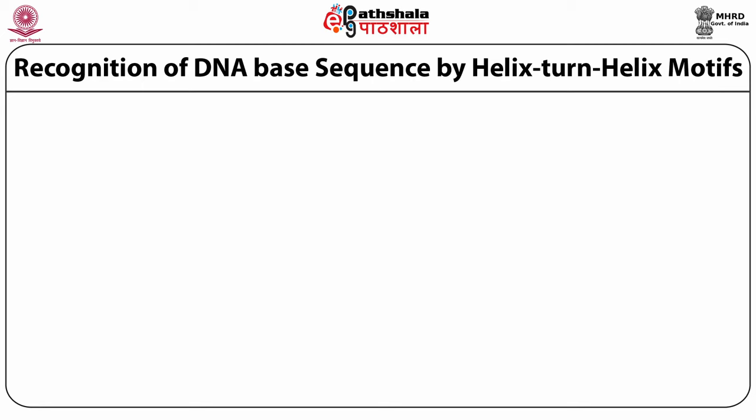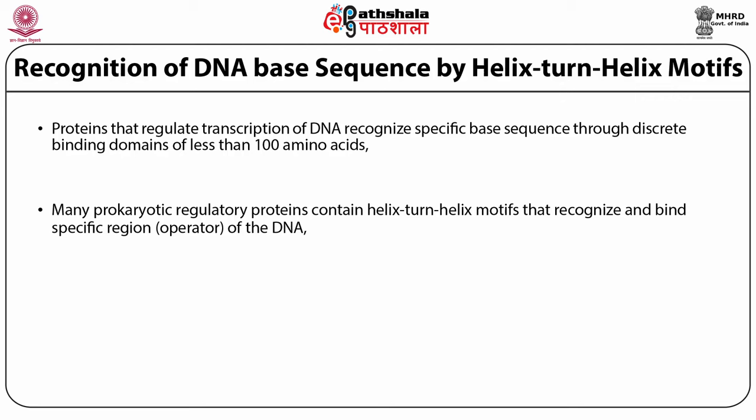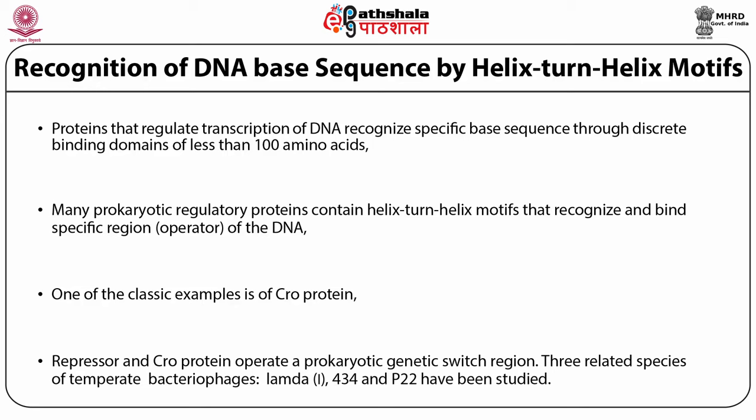Recognition of DNA base sequences by helix-turn-helix motifs: many DNA binding proteins have helix-turn-helix motifs. The proteins that regulate transcription of DNA recognize DNA base sequence through discrete binding domains of less than 100 amino acids. Many prokaryotic regulatory proteins contain helix-turn-helix motifs that recognize and bind to a specific region of the operator of DNA. One of the classic examples is of cro-protein. Repressor and cro-protein operate a prokaryotic genetic switch. Three related species of temperate bacteriophages — lambda, 434 and p22 — have been studied.